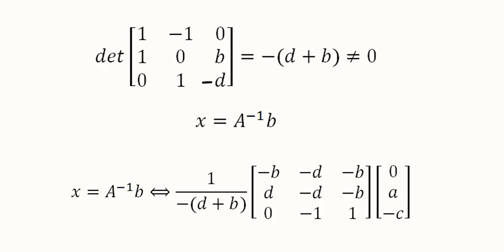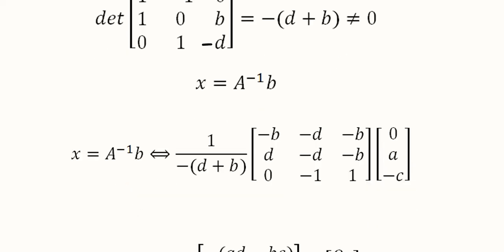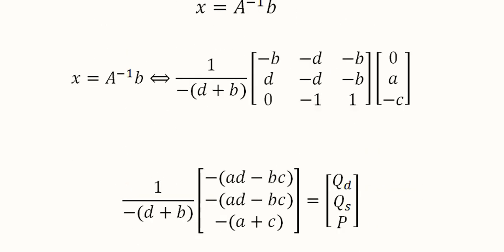Then we have to divide it with the determinant, this determinant value, and b is also there at the end getting multiplied. Now we can solve this. Once we do, we have multiplied this term inside and as a common factor we can write it.